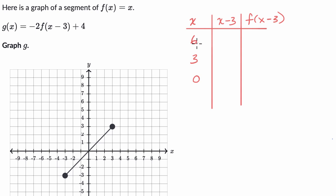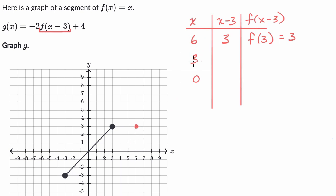When x is six, x minus three is three, and then f of x minus three is the same thing as f of three, which equals three. So when x equals six, f of x minus three is equal to three. By the same logic, when x is three, x minus three is zero — three minus three — and so f of x minus three is the same thing as f of zero, which equals zero. So when x equals three, f of x minus three is equal to zero.